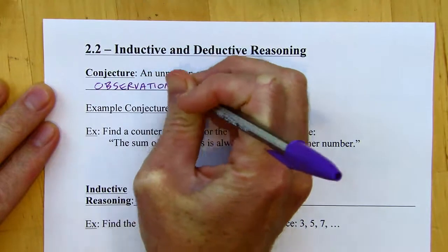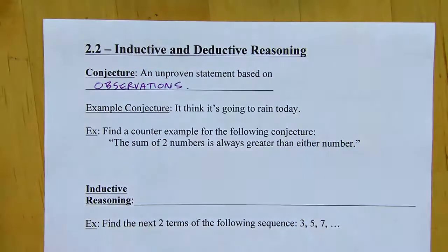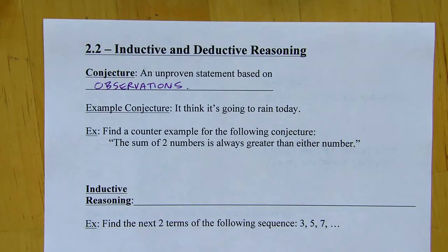Here's an example conjecture: I think it's going to rain today. That could be a very educated guess, but I don't know for sure that it's going to rain. So it's unproven and it's based on my previous observations — when it's cloudy out or there are dark rain clouds, I might think it's going to rain.